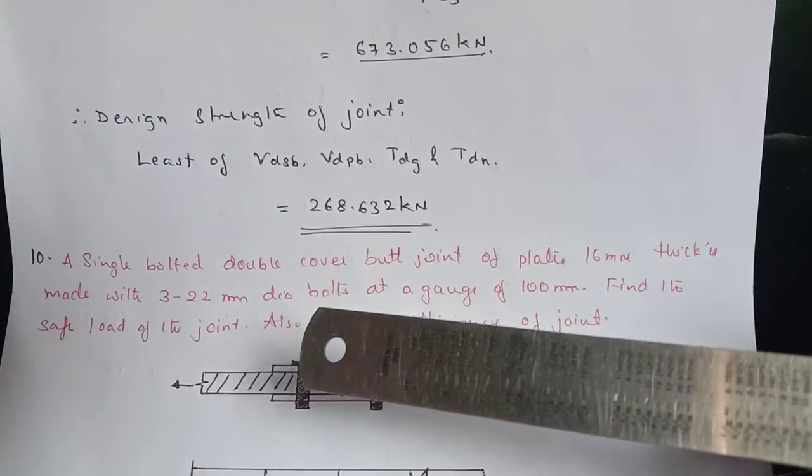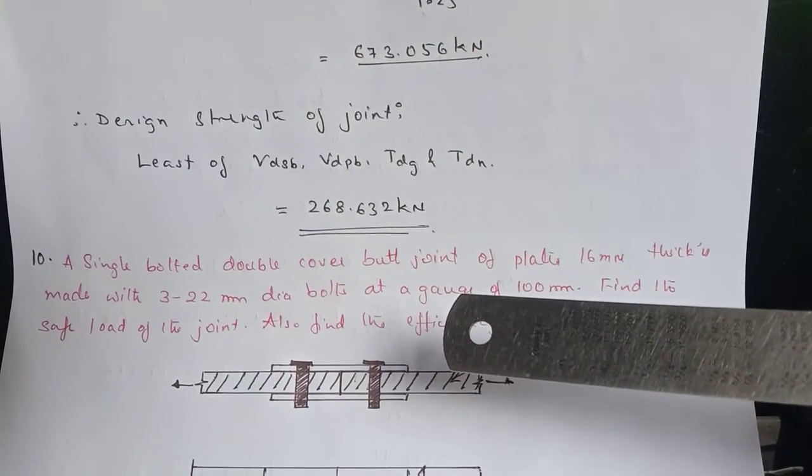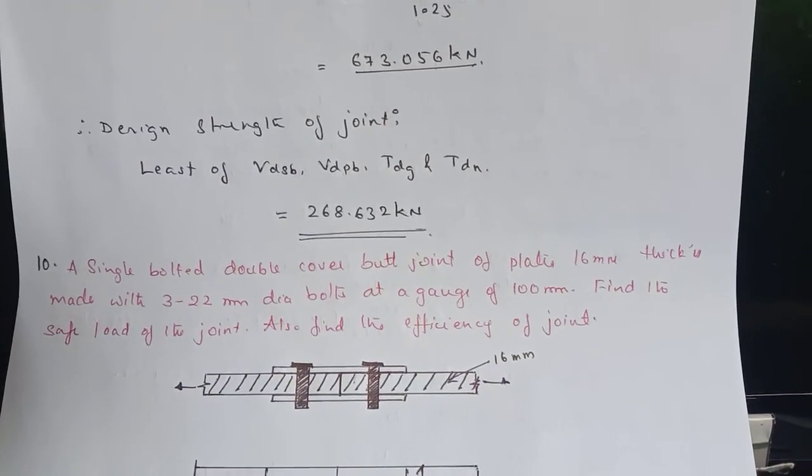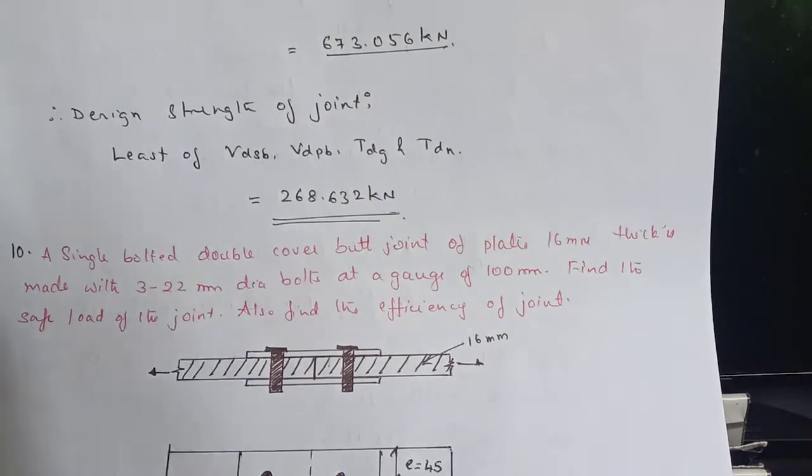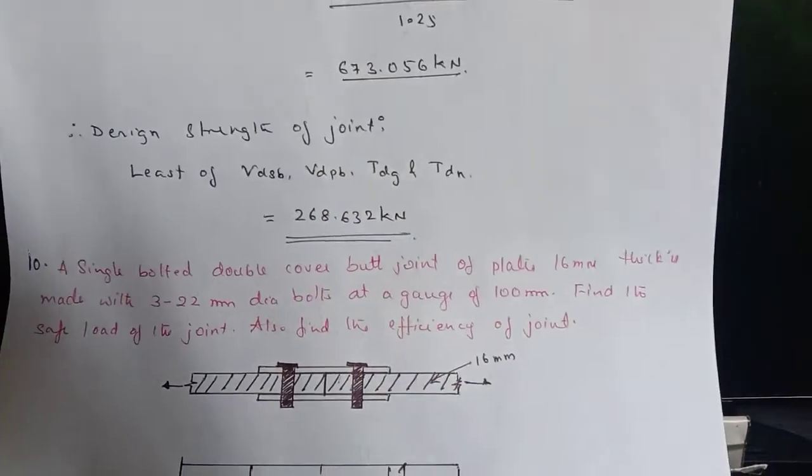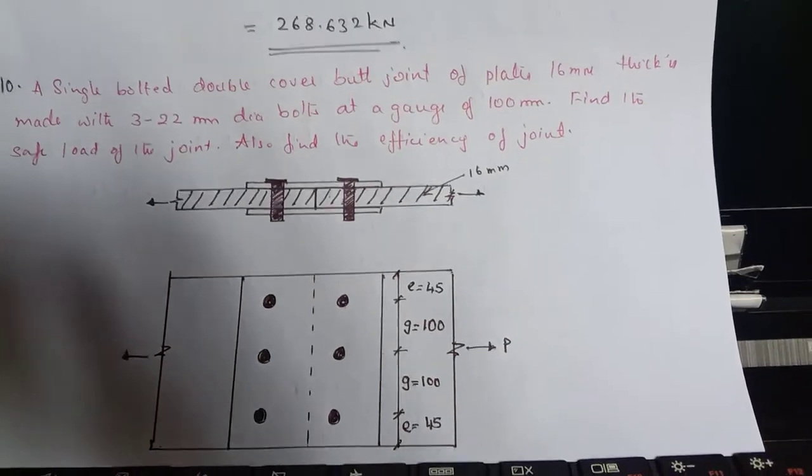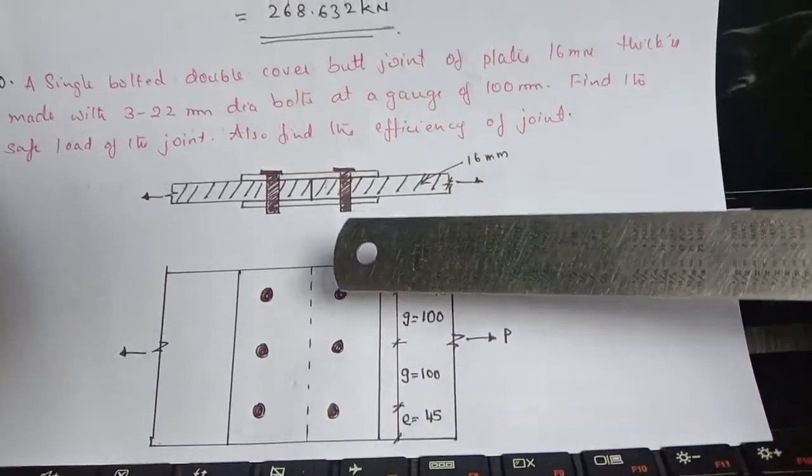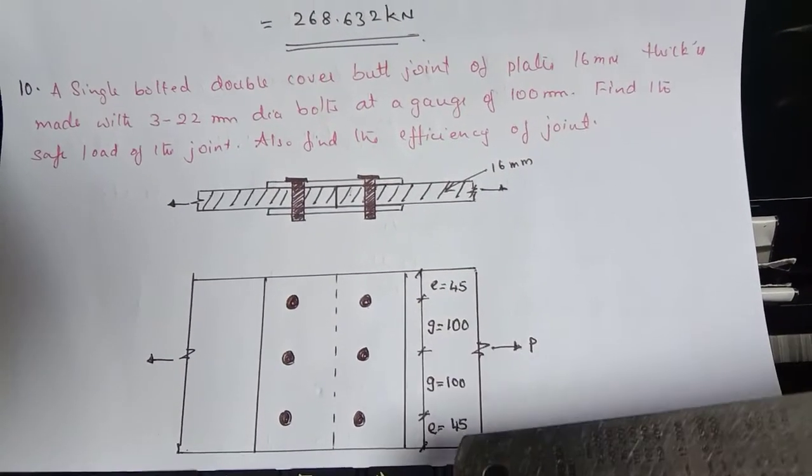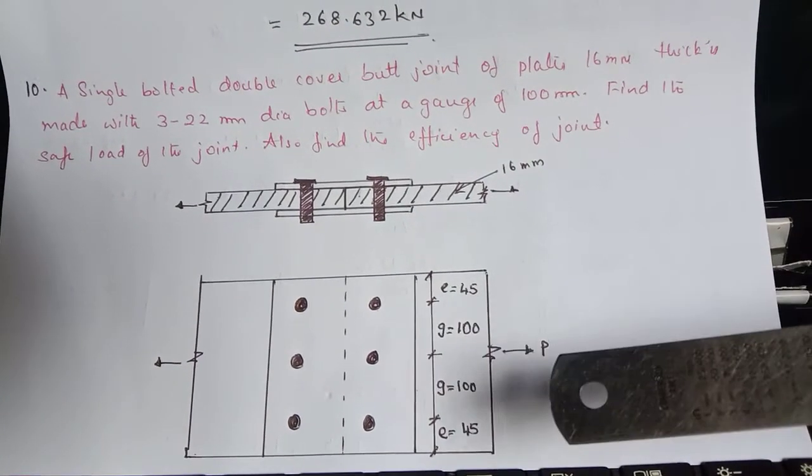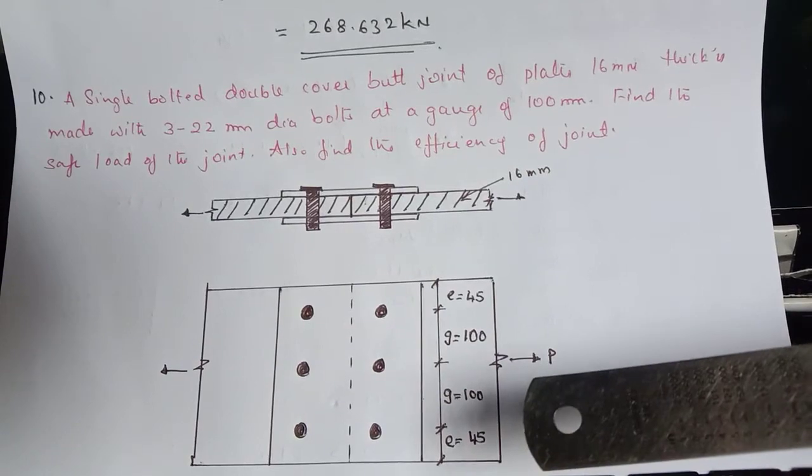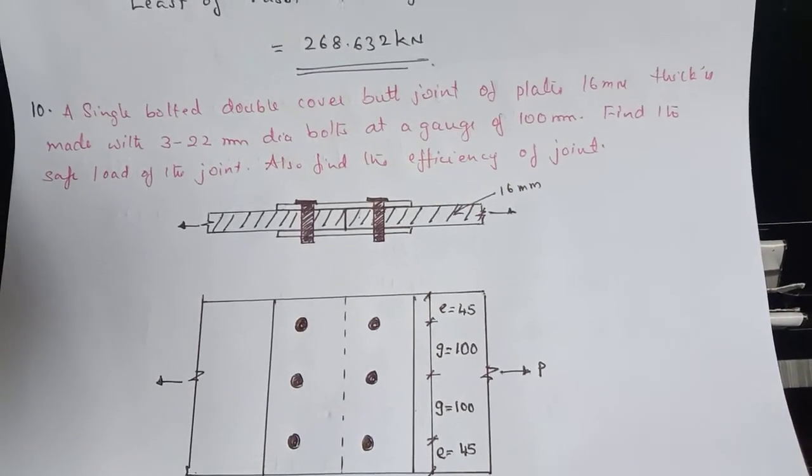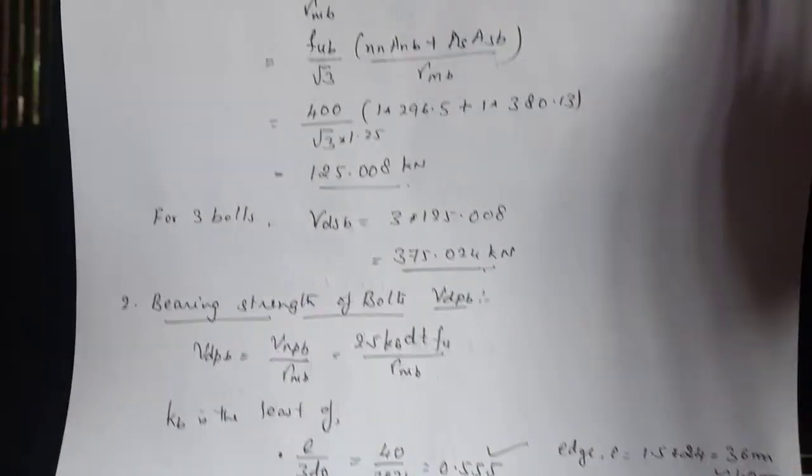A single bolted double cover butt joint of plate 16 mm thickness made with three of 22 mm diameter bolts at a gauge of 100 mm. Find the safe load of the joint also find the efficiency of joint. So this is how the butt joint look like. So here we have the main plate, main plate is 16 mm, cover plate thickness is not given. We will find it out. Then the gauge distance is 100 mm, end distance is 45 mm. This is how the load acts.